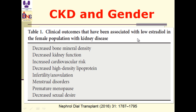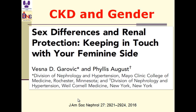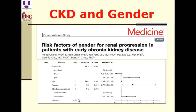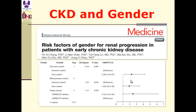Clinical outcomes associated with low estradiol in women with kidney disease include decreased bone mineral density, decreased kidney function, increased cardiovascular risk, decreased HDL, infertility and anovulation, menstrual disorders, premature menopause, and decreased sexual desire. Females are more protected from CKD than men. Risk factors for CKD progression also differ by gender — proteinuria is more impressive in men, while dysglycemia is riskier in females.